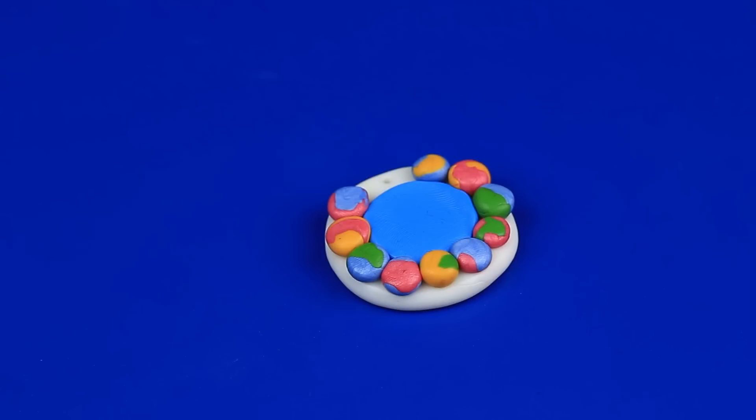Now you can bake the pendant. Look up the instructions to learn the temperature and time to bake your polymer clay. The clay we're using should be baked at 230 degrees Fahrenheit for 10 to 15 minutes.